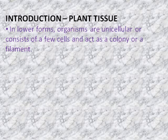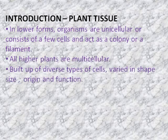Now, in the lower forms, organisms are unicellular, consisting of one or few cells, and sometimes these cells act as a colony or a filament. For example, in the case of bacteria - unicellular - and in some algae you will see filamentous forms, a number of cells united one above the other forming a filament. But in the case of higher forms, the plants are multicellular.